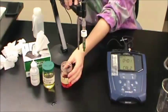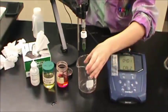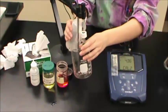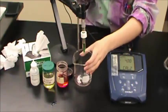The screen should now read CAL 2. Remove the electrodes from the first buffer solution and rinse them with deionized water and blot them dry before placing them in the second buffer solution.